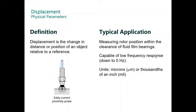Displacement is the change of the distance or position of an object relative to a reference. For displacement, we use the eddy current transducer or proximity probe. The typical application is measuring rotor position within the clearance of fluid film bearings. It is the only sensor capable of measuring zero hertz. Zero hertz is static or position. The units are microns peak-to-peak or thousandths of an inch or mils.